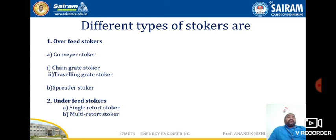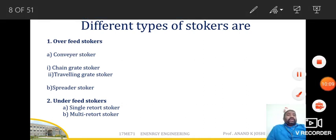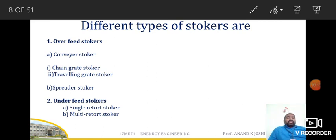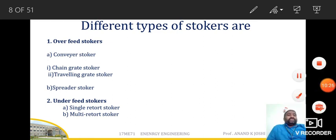Now let us discuss the different types of stokers. The first is the conveyor stoker, which includes the chain grate stoker and the traveling grate stoker. There is also the spreader stoker. The main category is the underfeed stoker, which has two types: the single retort stoker and the multi-retort stoker. We will discuss these concepts in detail in the coming slides. Thanks for watching this video.